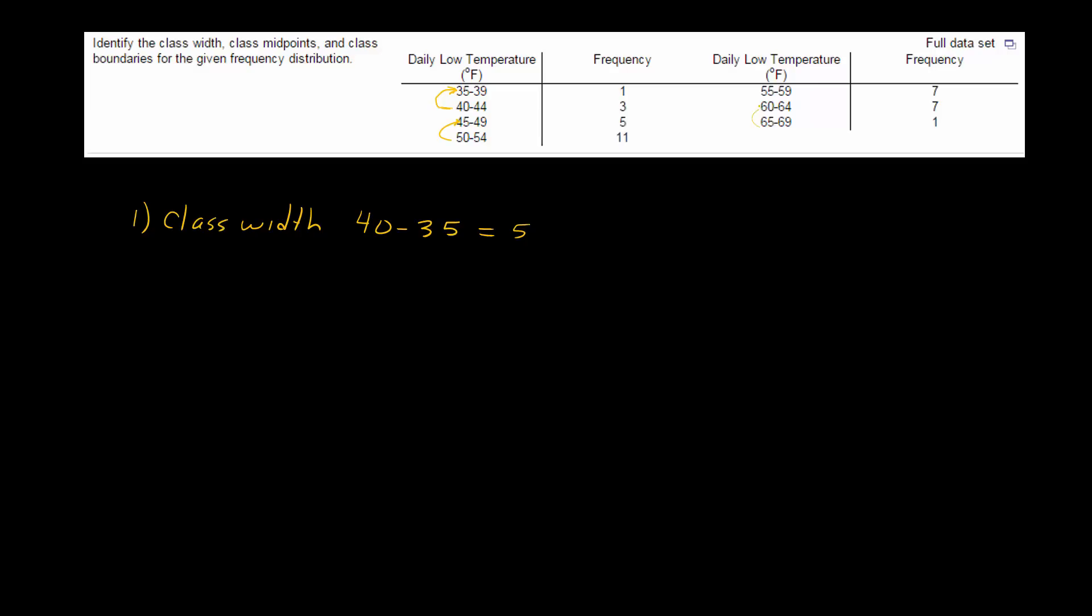All right, class midpoints. Well, in this case, what you want to do is you want to add each class. So the first one's 35 plus 39, and then divide by 2 to find the middle value. I'm going to do the next one. I'm just going to write them all down first.